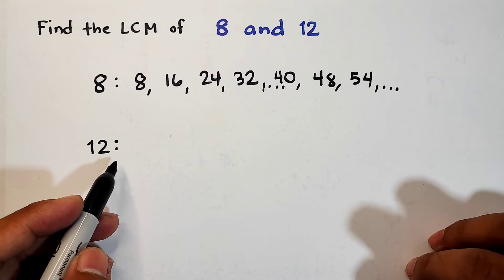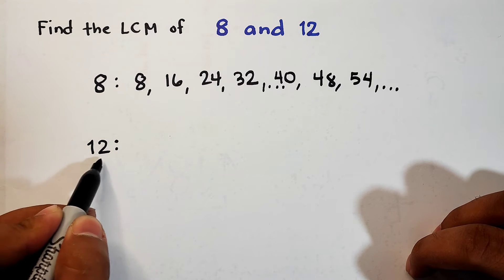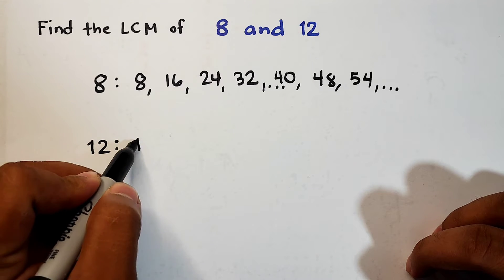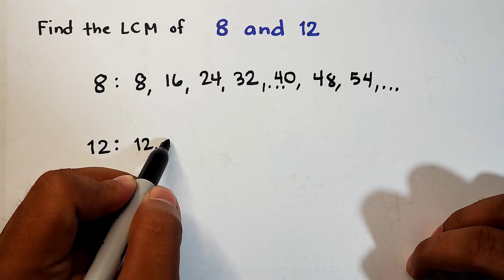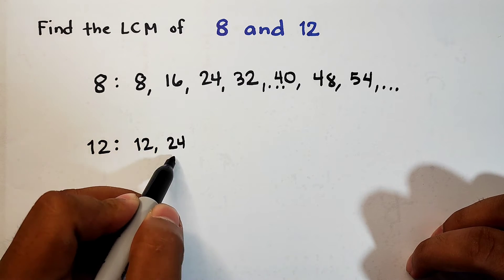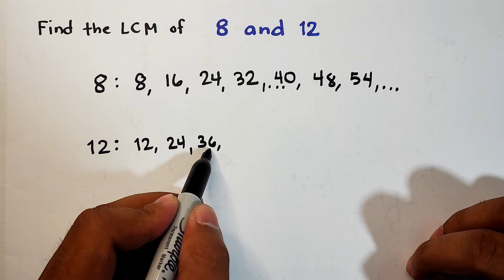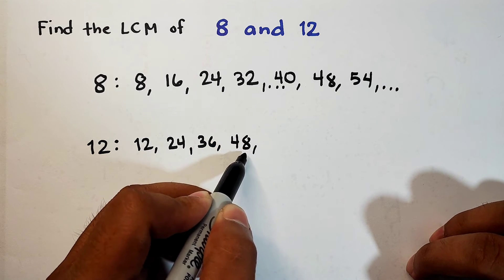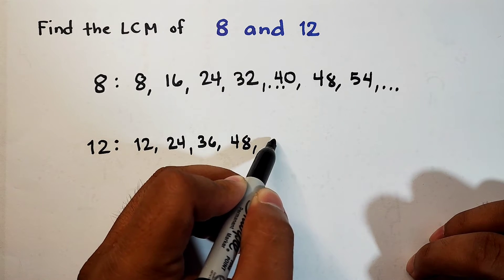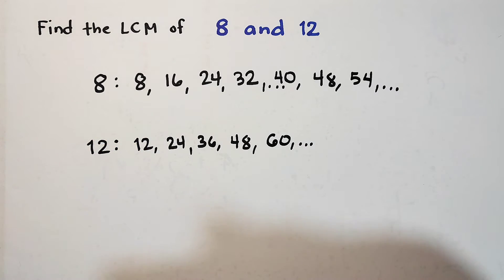Next, what about the multiples of 12? For the multiples of 12, what you need to do here is to list down first the number 12, then add 12 from 12 that is 24, 24 plus 12 that is 36, 36 plus 12 that is 48, then 48 plus 12 that is 60, and so on.